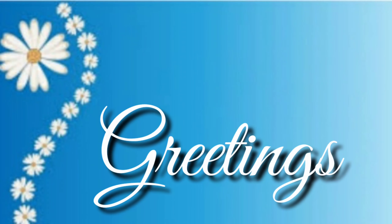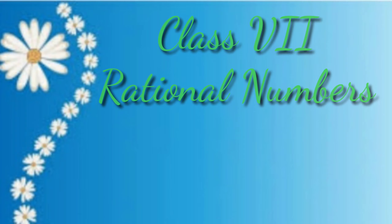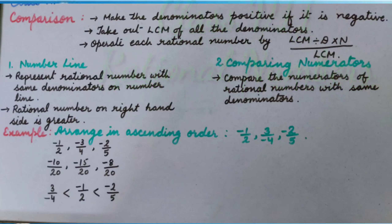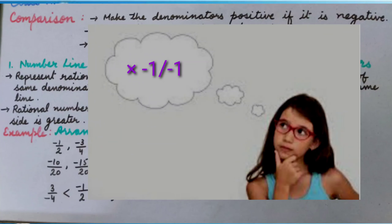Greetings, Demedia students. Let's see the comparison of rational numbers. First of all, we will make the denominators positive if they are negative. You know how to make a denominator positive if it is negative — by multiplying by minus 1 upon minus 1.